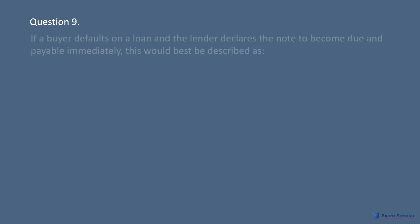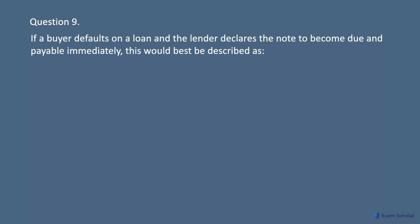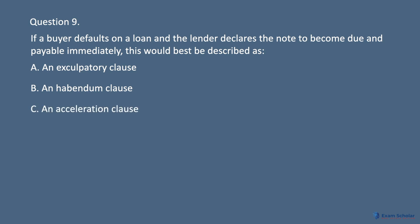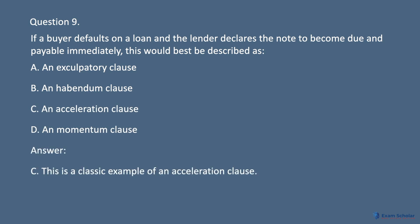Question 9. If a buyer defaults on a loan and the lender declares the note to become due and payable immediately, this would best be described as: A. An exculpatory clause. B. An habendum clause. C. An acceleration clause. D. A momentum clause. Answer: C. This is a classic example of an acceleration clause.